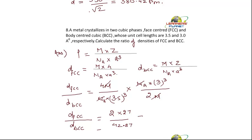And this will give what? It will give 2 multiplied by 27 divided by 42.87. That will be 1.259. That is, the ratio of density of FCC crystal to the density of BCC crystal is equal to 1.259.